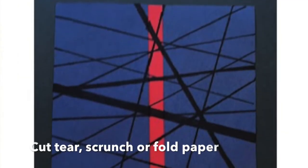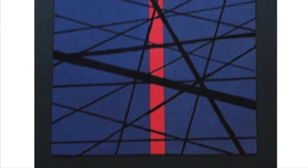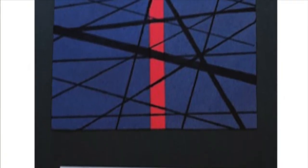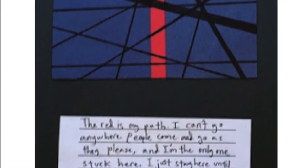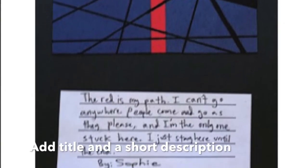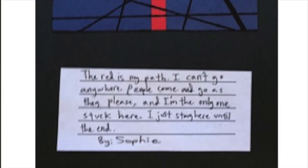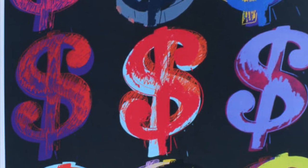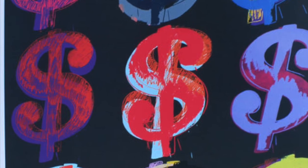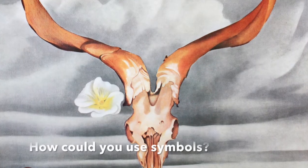Think about different ways you might cut, tear, scrunch, or fold paper to create a 2D or 3D collage. Your finished collage should be mounted on a larger sheet of paper. Cut out a smaller piece of lined paper to add a title and a 1 or 2 sentence description of your collage. You may choose to copy the style of one of our modern American artists or create your own style. How could you use symbols in your collage?